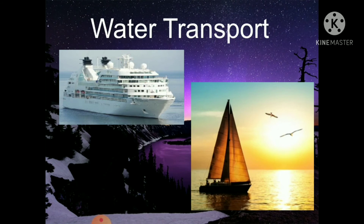Water Transport: Water transport is the oldest and cheapest means of transport. Boats, ships, steamers and rafts are means of water transport. Smaller boats such as yachts can sail on lakes and rivers. Water transport is slower than land and air transport. However, a large number of people or large quantities of goods can be transported by ships to far off places. The Indian Navy patrols the coastline in highly advanced ships. Boats and ships are made in shipyards.